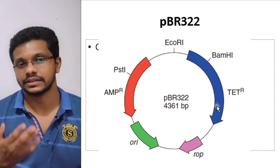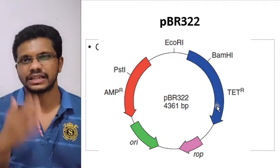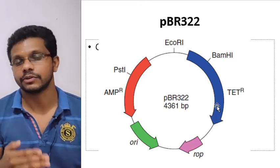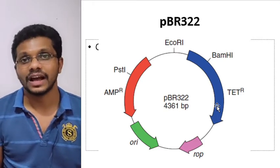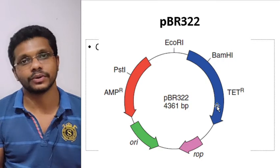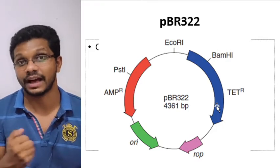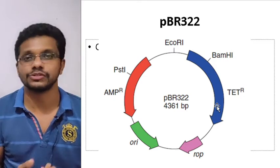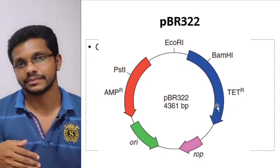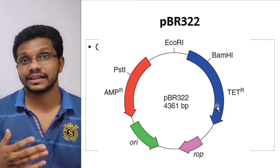If E. coli gets this ampicillin-resistant gene, it will produce beta-lactamase, the enzyme which actually cleaves penicillin or ampicillin. With the help of this gene, the bacteria will be able to degrade the ampicillin into harmless compounds and survive. So if the bacteria has this plasmid, they will be resistant to both ampicillin and tetracycline. By using these resistant genes, we are actually selecting the bacterial cells which have taken up this plasmid. We can distinguish bacteria with the plasmid from those without by looking at their resistance properties.